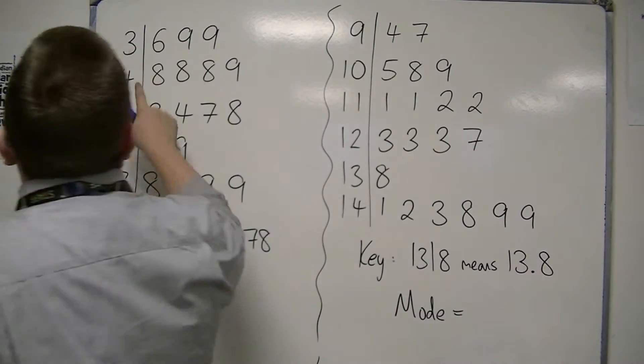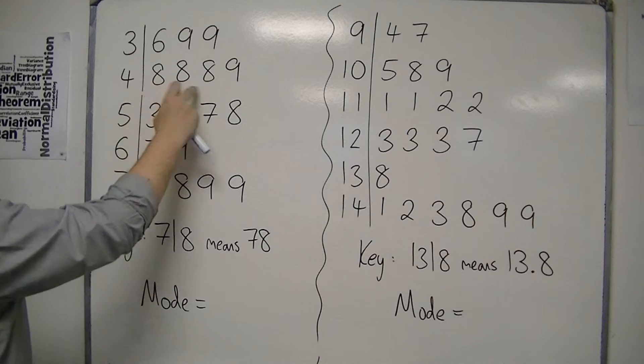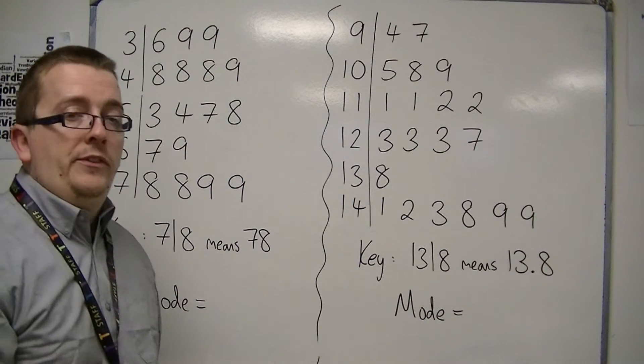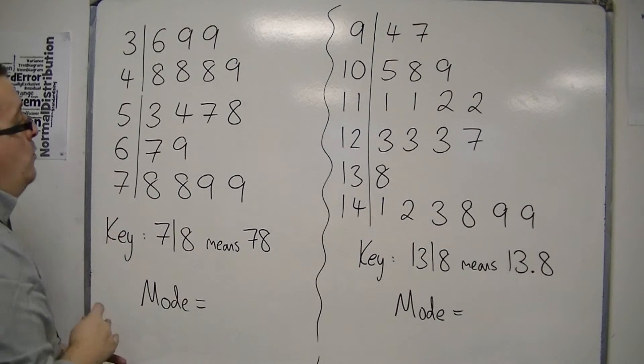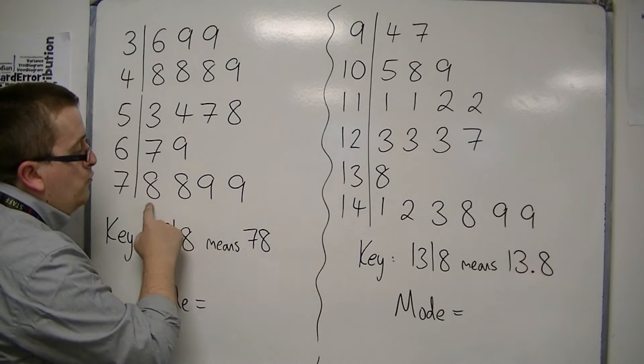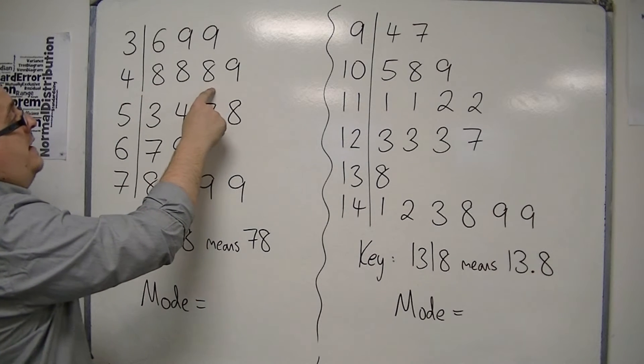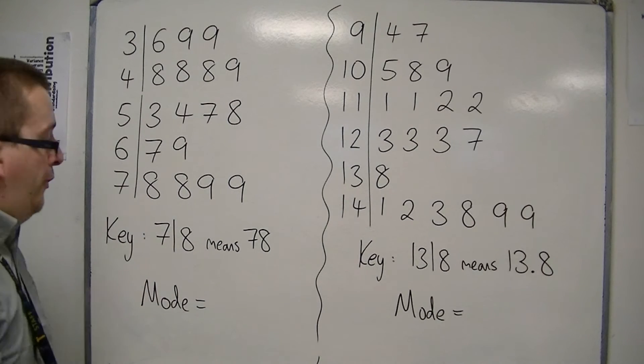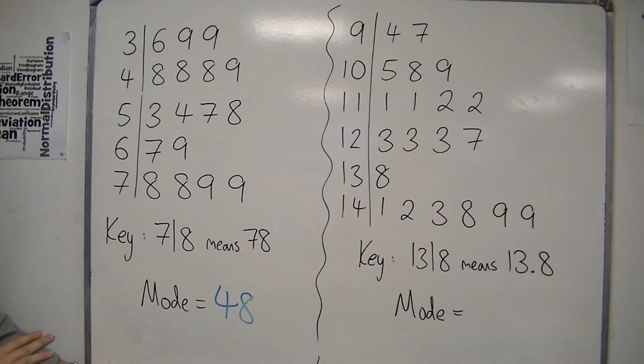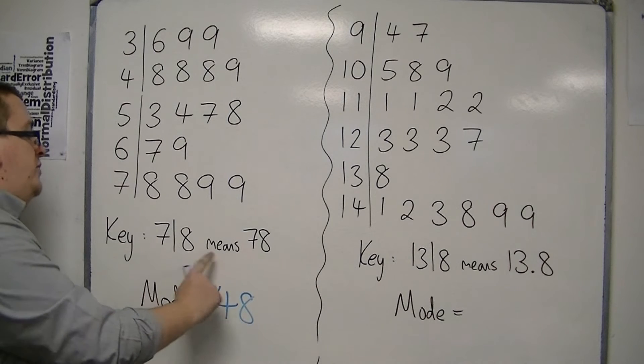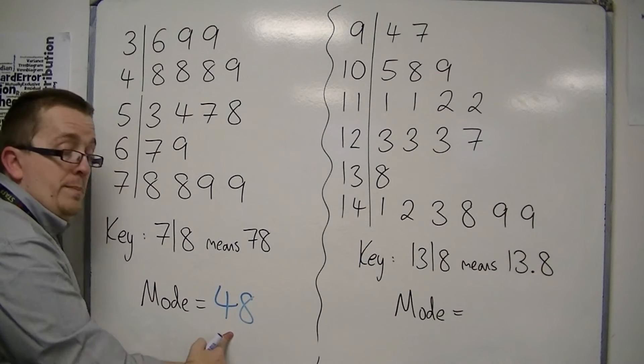So remember that 4, 8 means 48. So in actual fact we've got 48, 48, 48. So we've actually got three 48's there. And then we've got things like 78, 78, 79, 79. So what you're doing is you're trying to find a row of the same numbers. So we've got two 8's there, two 9's there, but we've got three 8's there. So 48 appears most often. So 48 is the number that we're looking for. That is the mode. Make sure that it's 48 based on the key. Because if this had said 7 line 8 means 7.8, then this would be 4.8.